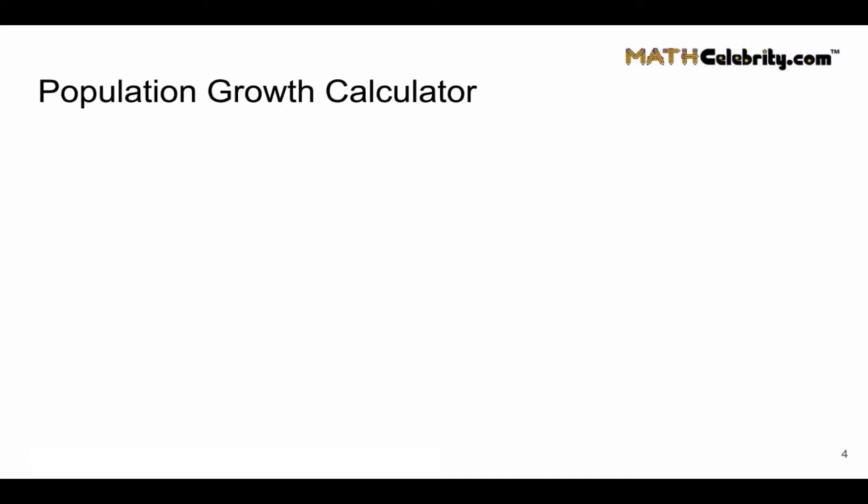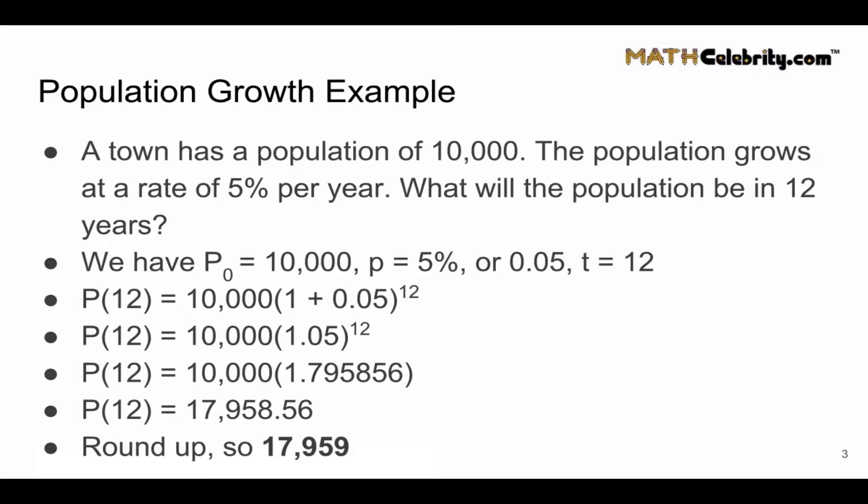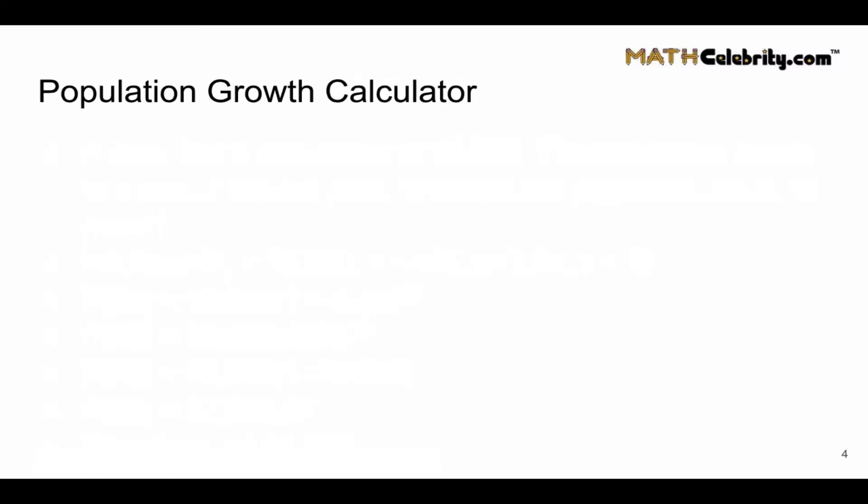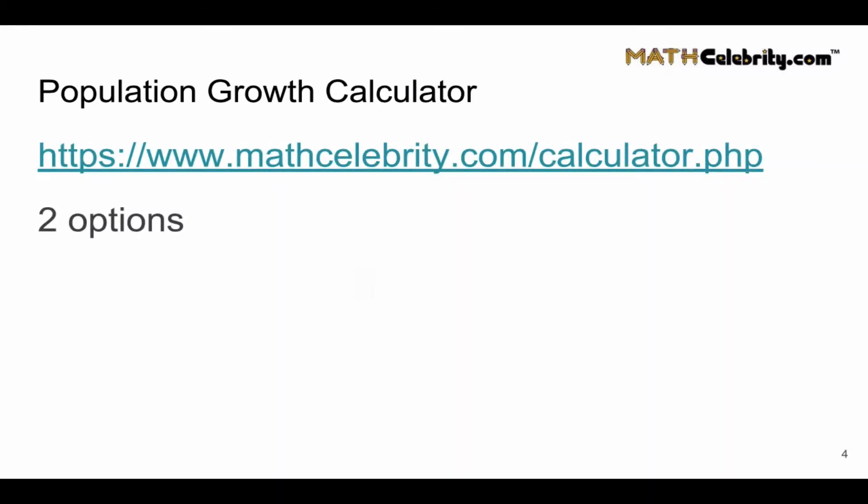Now, the chances are very strong that you're going to run across more population growth problems. In fact, you may even be looking at one now, where the numbers differ from the example right here. If that's the case, do you really want to mix and match numbers to match this problem? Or is there an easier way? I've created one for you.